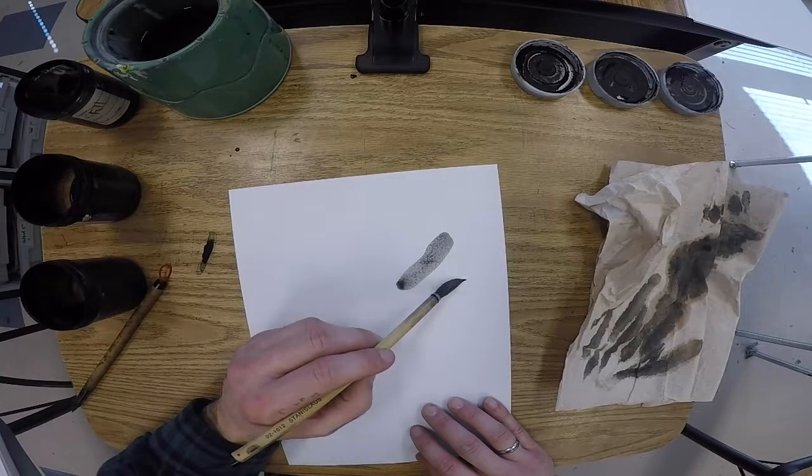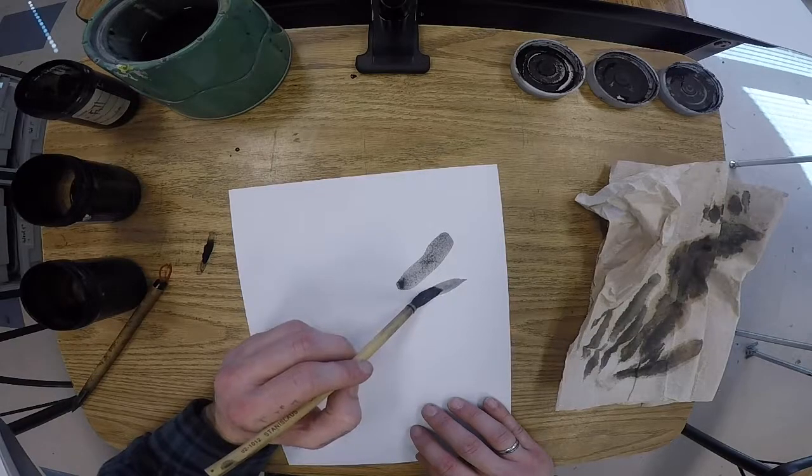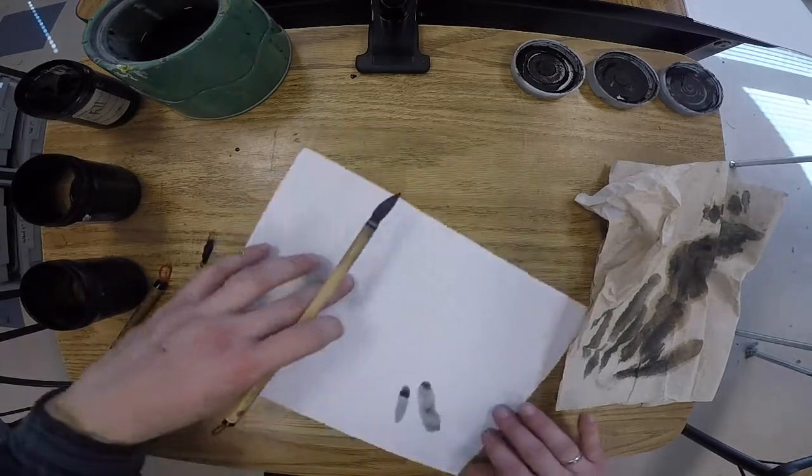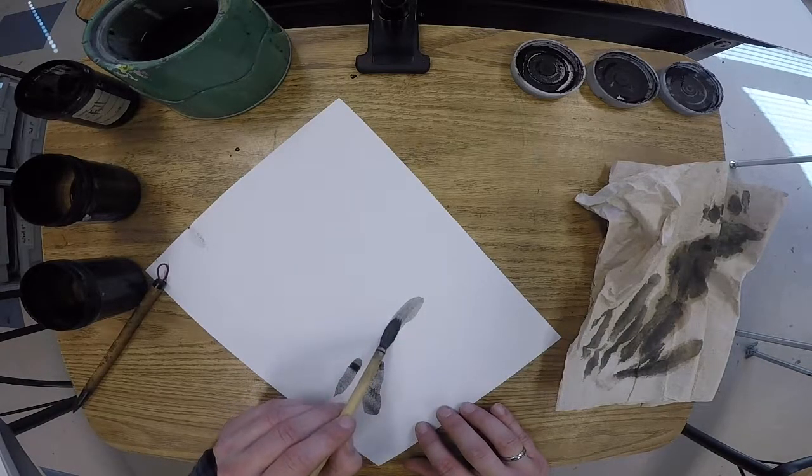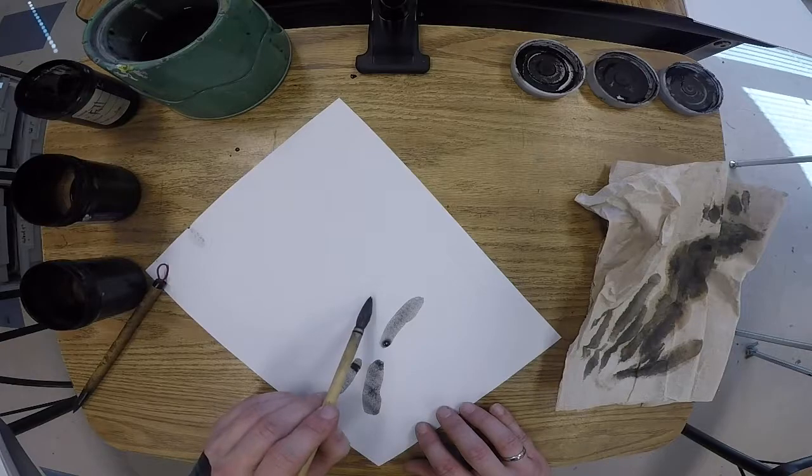Now we want our back wing to be a little bit smaller than our front wing. We do the same thing on the other side. Spin the paper if you need to as you work—nothing wrong with that. Get it to where it's comfortable for you. Back wing.